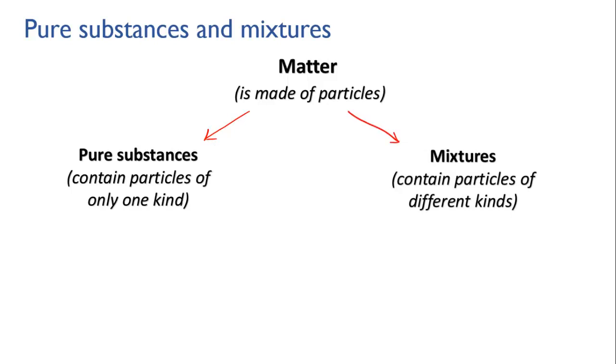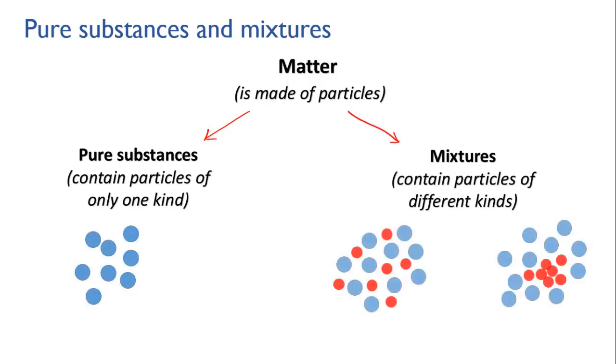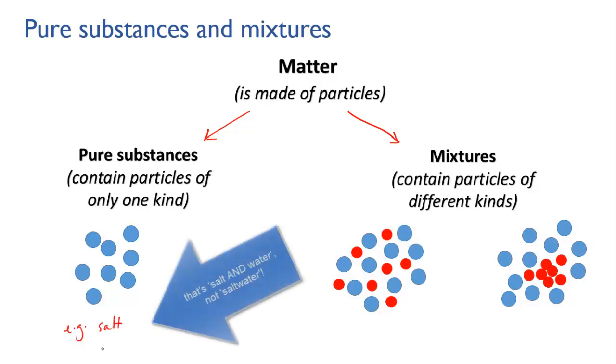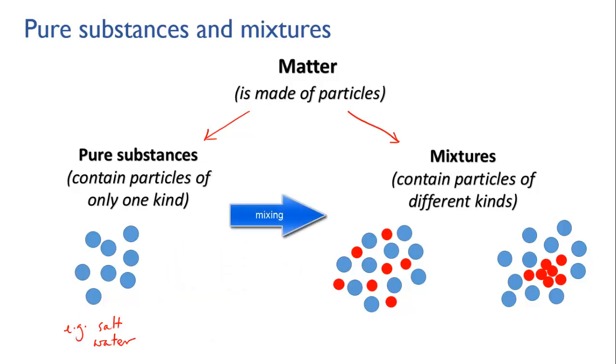For example, salt, table salt, is a pure substance. All the particles in salt are salt particles. Water is also a pure substance. All the particles in it are water, as long as it's actually pure water. But if you mix salt and water then it becomes a mixture and the salt particles and the water particles are mixed together. They don't change their identity. The water particles remain water particles and the salt particles are still salt. So they can be separated back into pure substances.